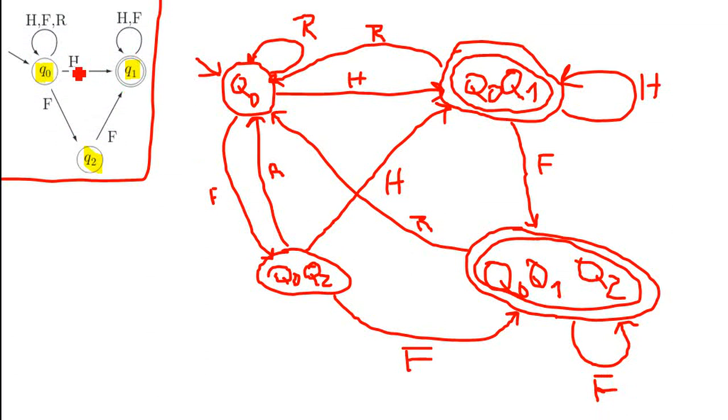The last one is the input H. So let's check that. We can get back into Q0 and we can get to Q1 and we once again can get to Q1. So we have to draw this line to this Q0, Q1 combined state when we have the input H.